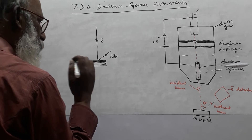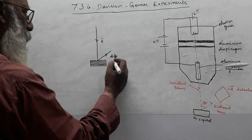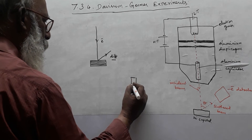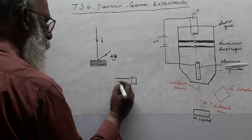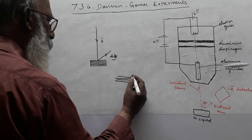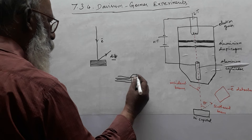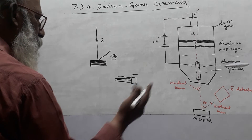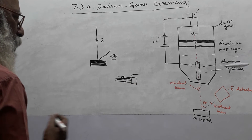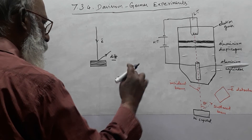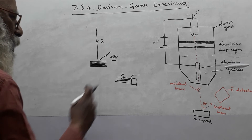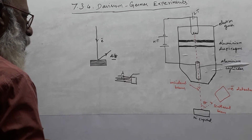Why does this happen? What is meant by diffraction? Suppose we allow any ray to hit on the surface of an object — it may bend and move towards the next side. That is called diffraction. The diffraction depends on the incident wavelength. That is the basic principle.